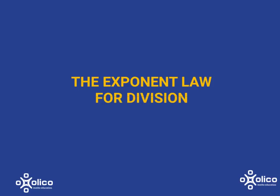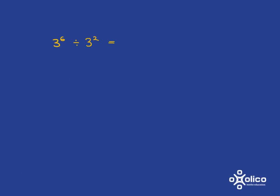Let's do a quick recap of the exponent law for division. If we're asked to look at 3 to the 6 divided by 3 to the 2, the first thing we need to remember is that division can always be rewritten as a fraction.